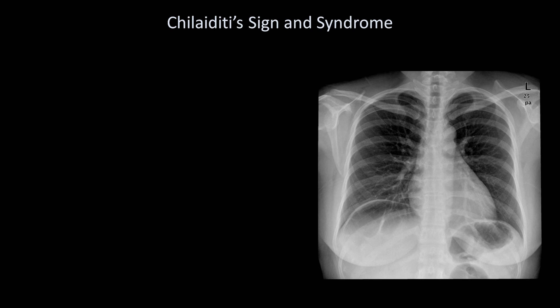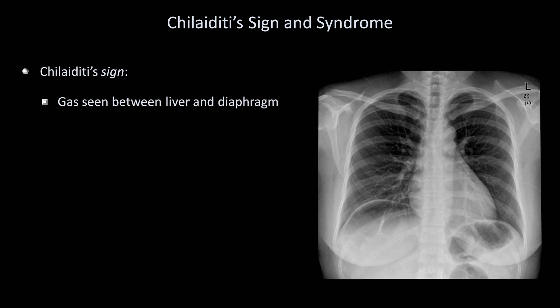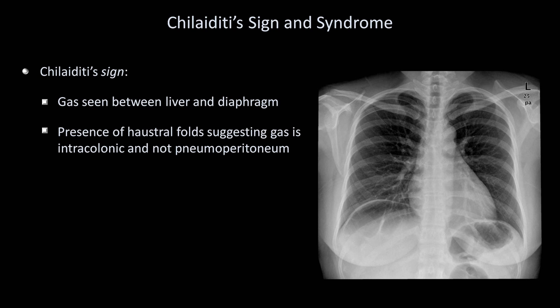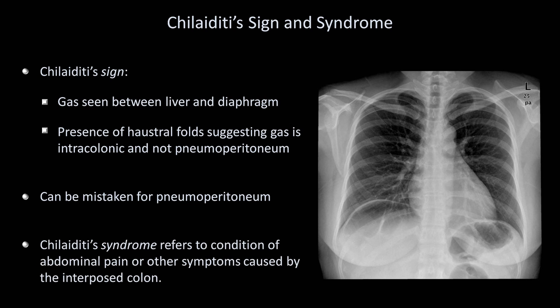And here is the very last finding of the day. Most people initially see what appears to be free air under the right diaphragm. However, this finding is called the Chilaiditi sign, which is due to part of the colon becoming interposed between the dome of the liver and the diaphragm. It can be distinguished from free air by the presence of rugal folds. Obviously it is easily mistaken for pneumoperitoneum. The term Chilaiditi syndrome refers to the condition in which abdominal pain or other symptoms, such as those from obstruction, are related to the unusual location of the colon.